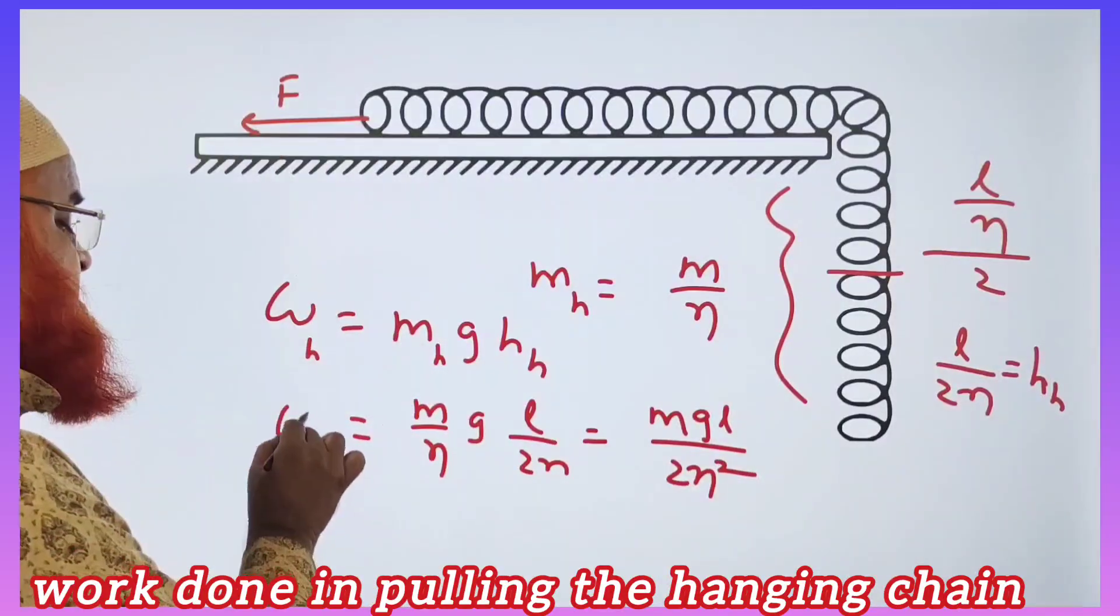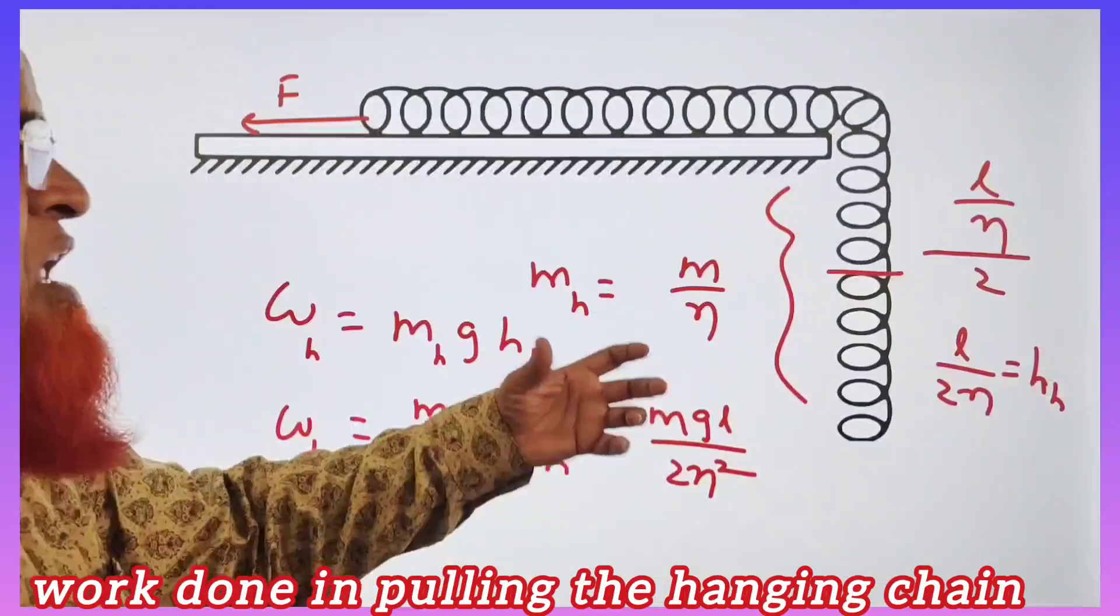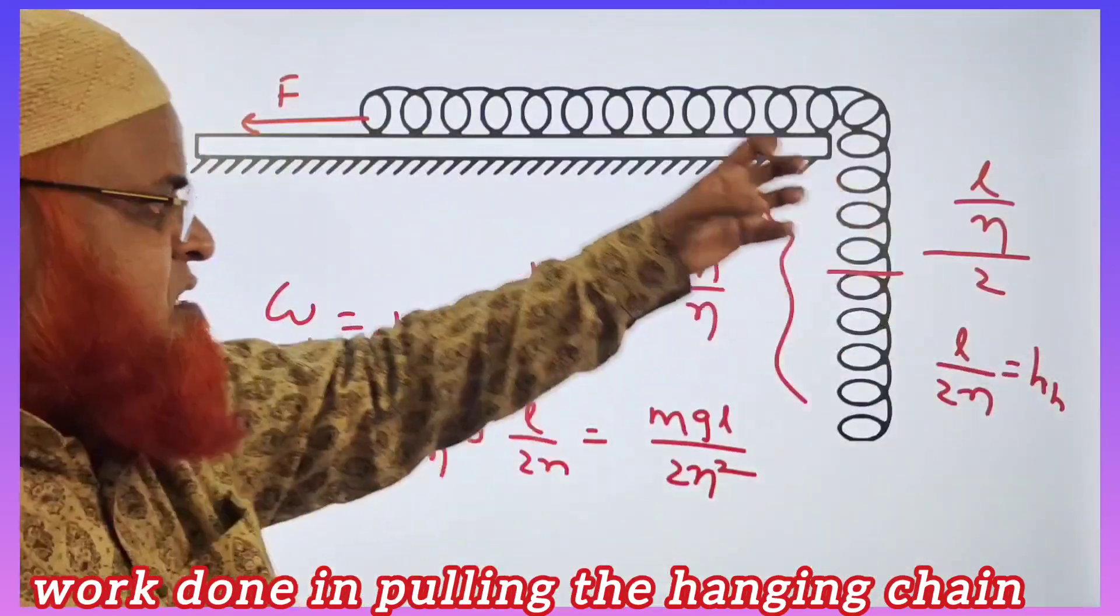2N squared - this is the work done in pulling the total chain on the surface of the body.